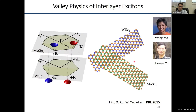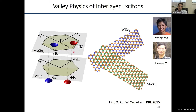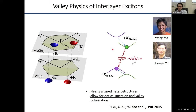Something that really distinguishes this system from gallium arsenide is the unusual band structure we've already talked about. When we think about these heterostructures, we have the electron associated with the MoSe2 conduction band coupled together with the WSe2 valence band. What's interesting is we can actually control how these bands align in momentum space by spatially controlling the twist angle in real space. By making zero-degree, one-degree, or two-degree twist angle structures, we can vary the alignment of the plus K and minus K valleys in momentum space.